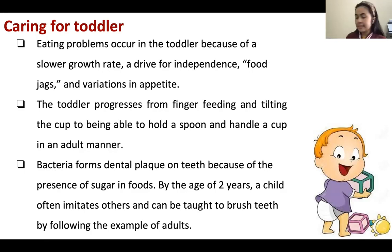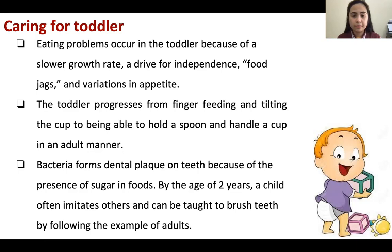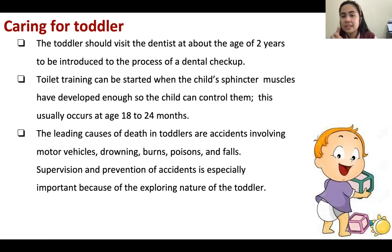Eating problems occur in the toddler because of a slower growth rate and a drive for independence. They have food jags — wanting only certain foods like french fries and fried chicken. We should establish a nutritious food plan. The toddler progresses from finger feeding to being able to hold a spoon and handle a cup. By age two, a child often imitates others and can try to brush teeth following the example of adults. The toddler should visit the dentist at about two years of age. Toilet training is very important at this stage.